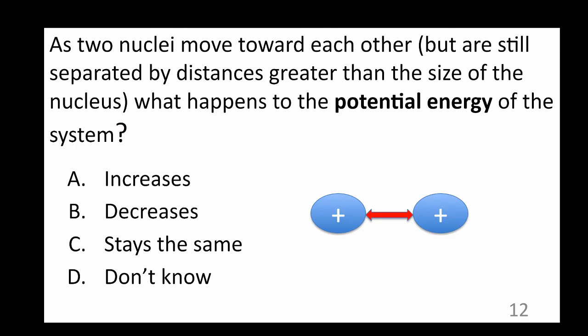Keeping with the notion that two nuclei are approaching each other, but still farther apart than the distance of one nucleus, what happens to the potential energy of the system? The answer here is A, it should increase. Since these two nuclei are repelled by each other, the potential energy will increase while they are approaching each other.